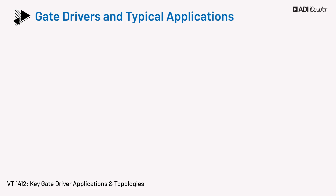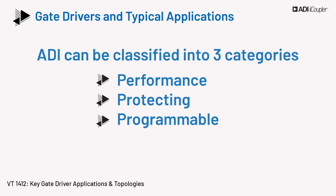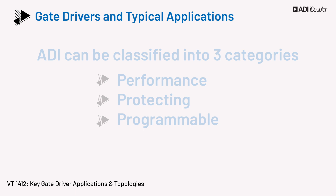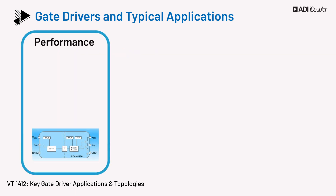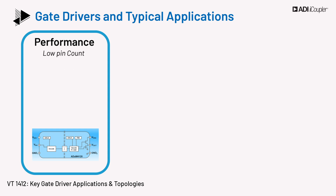The isolated gate driver offerings from ADI can be classified into three categories: performance, protecting, and programmable. Performance gate drivers provide basic functions such as high drive strength and under voltage lockout option UVLO. Other standard features are low pin count, small footprint, low delay, and high CMTI.